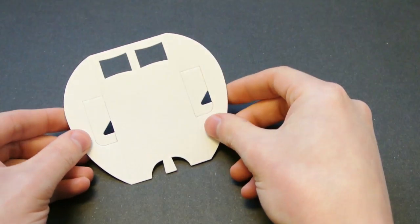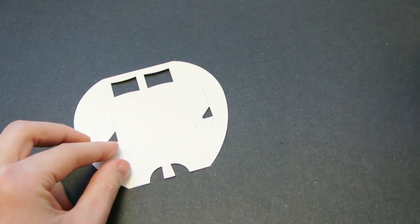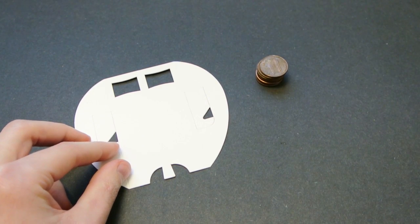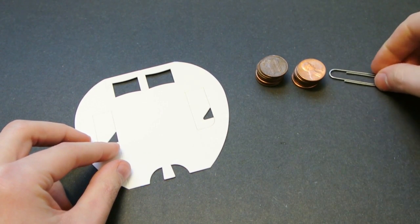The things we need are the trebuchet card itself, 16 pennies, a jumbo paper clip, at least one, and some tape.